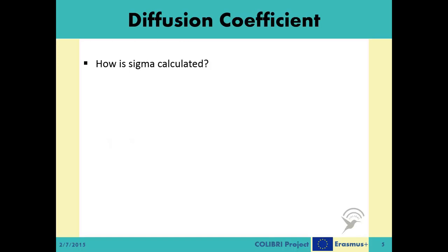Next, we have to define sigma. Following a simple Brownian motion, sigma is calculated by taking the square root of 2 times the diffusion coefficient times delta t. As described above, delta t is a system variable which we can choose based on our desired granularity. On the other hand, the diffusion coefficient, capital D, is a system parameter.